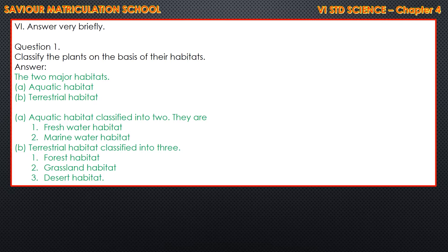Then, Roman number 6 in the book — very short answer, children. Question 1: Classify the plants on the basis of their habitat. The answer is: there are two major habitats — A. Aquatic habitat, and B. Terrestrial habitat. Aquatic habitat is classified into two: first, freshwater habitat, and second, marine water habitat.